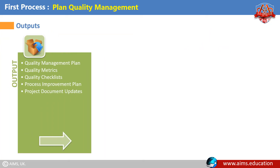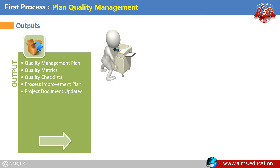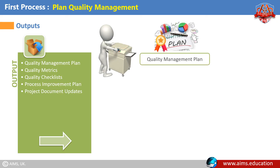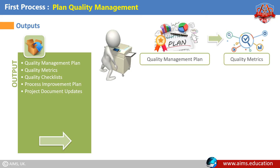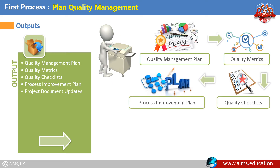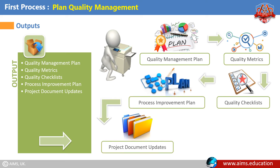Outputs of Plan Quality Management: The outputs are Quality Management Plan, Quality Metrics, Quality Checklists, Process Improvement Plan, and Project Document Updates.